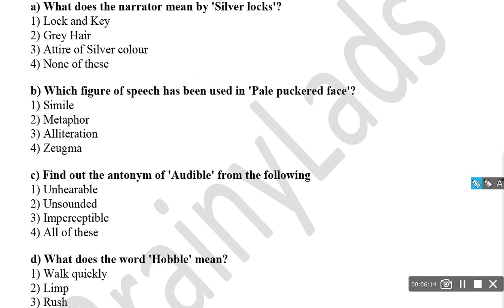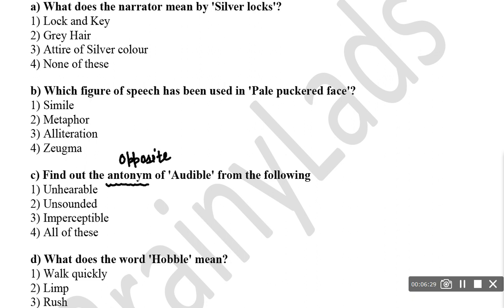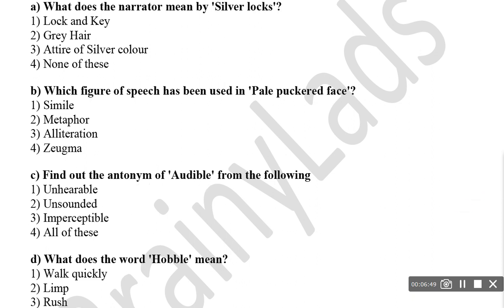Find out the antonym of the word 'audible'. Antonym means opposite. Audible means something that can be heard. So its opposite would be something that cannot be heard. The options are unhearable, unsounded, and imperceptible — all three are correct. So the answer is 'all of these'. Next, what does 'hobble' mean? It means to limp — to walk slowly with a limp. That is called hobble.